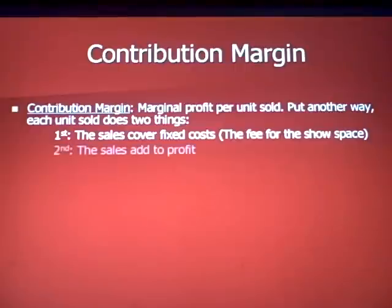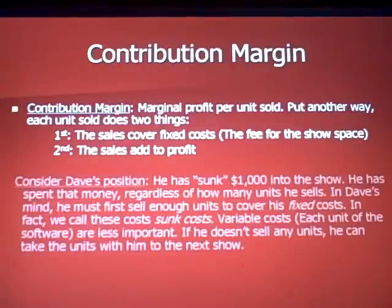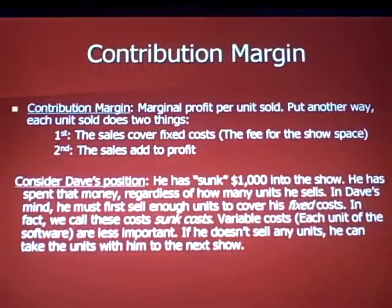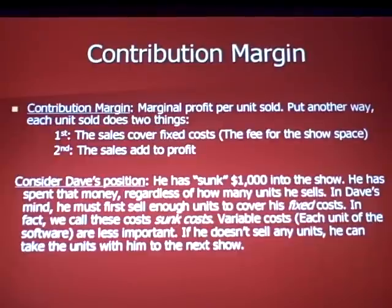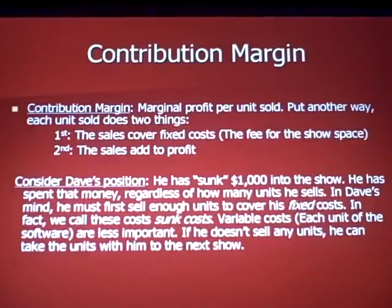Once you get past the fixed costs, the sales add to your profit. Dave has sunk a thousand dollars into the show — he spent that money regardless of how many units he sells. In his mind, he must first sell enough units to cover his fixed costs so he doesn't walk out of the trade show with a loss. We call these sunk costs — costs that you can't get back.